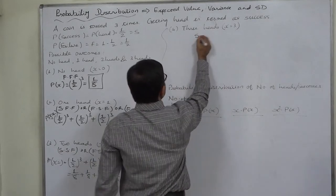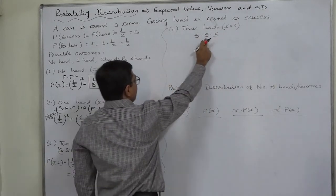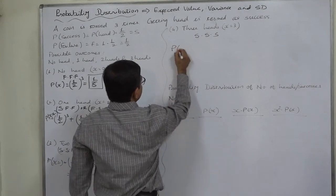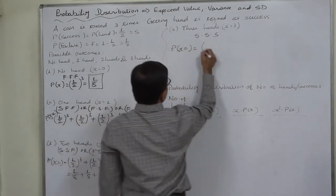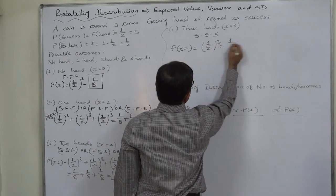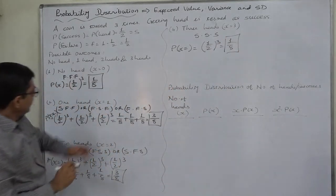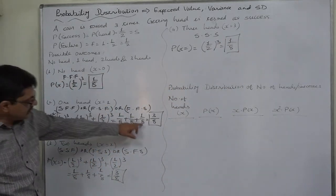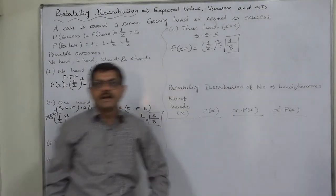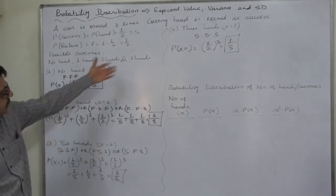Three heads are possible in only one way: success in the first, second, and third trials. The probability is (1/2)³ = 1/8. Summing all: 1/8 + 3/8 + 3/8 + 1/8 = 8/8 = 1, since all four outcomes are mutually exclusive and exhaustive.